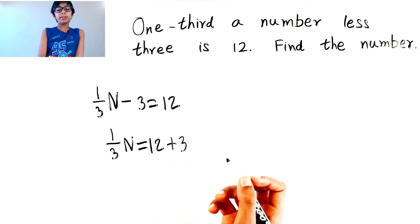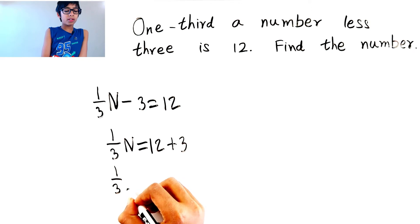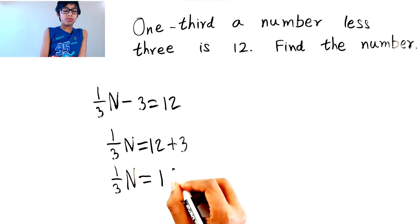So 12 plus 3 is 15. One-third n equals 15.